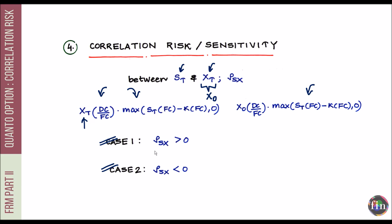For the Quanto option holder under positive correlation, he is immune to movements in XT and only has exposure to ST. He does not gain when XT and ST move up together — something the vanilla option holder was benefiting from. So as a rule of thumb: if ρ(S, X) is positive, the vanilla call with unhedged currency exposure is more valuable compared to the Quanto call.